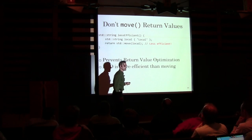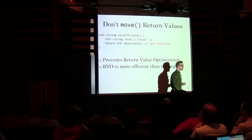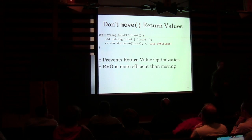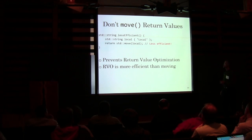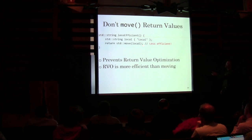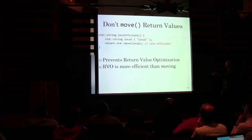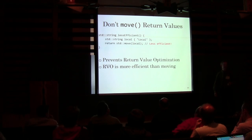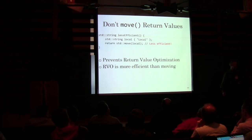Another thing that can happen is people get excited about move and start saying, 'I want to move anywhere I can.' That's not necessarily a good thing. If you do a std::move on a local that you're returning, that's going to disable the return value optimization. So you're actually hurting yourself.